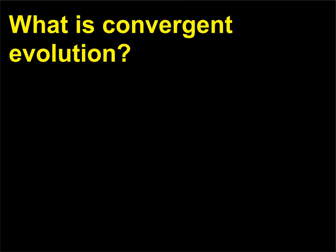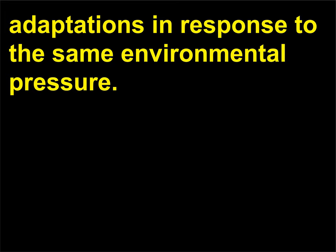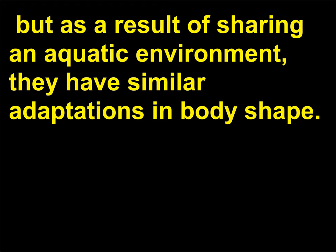What is convergent evolution? Convergent evolution occurs when diverse species develop similar adaptations in response to the same environmental pressure. For example, dolphins and sharks are descended from different ancestors, but as a result of sharing an aquatic environment, they have developed similar adaptations in body shape.